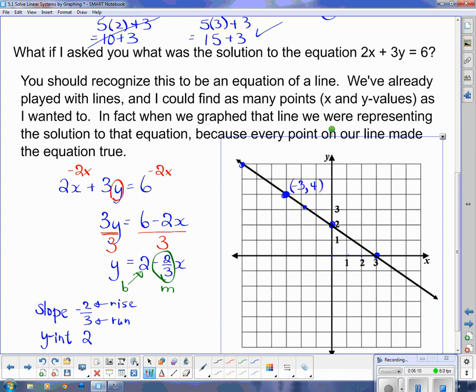That will make my equation true, because 2 times negative 3, and remember our original equation said 2x plus 3y has to equal 6. So 2 times negative 3 plus 3 times, oops sorry, 3 times 4, which is 12. Negative 6 plus 12 is actually 6. So that's what I wanted. I wanted it to be 6. That's what that said.